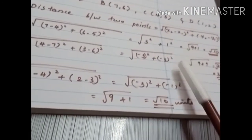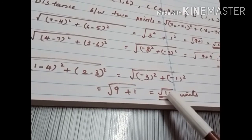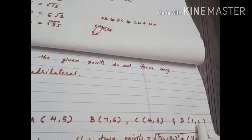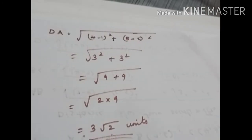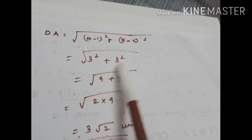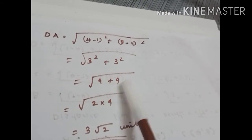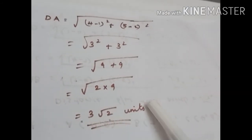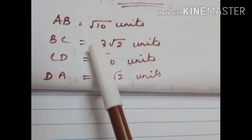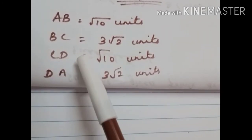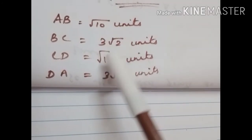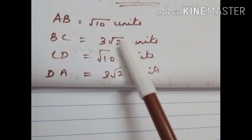For DA, considering D(1,2) and A(4,5): root of (4 minus 1) squared plus (5 minus 2) squared = root of 3 squared plus 3 squared = root of 9 plus 9 = 3 root 2 units. So AB = root 10, BC = 3 root 2, CD = root 10, DA = 3 root 2. Opposite sides are equal: AB equals CD, and BC equals DA.